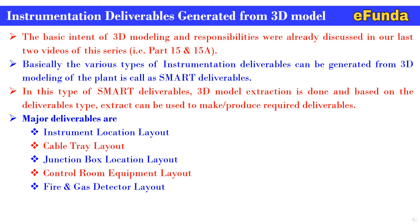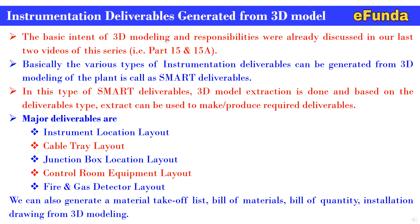Major deliverables are: instrument location layout, cable tray layout, junction box location layout, control room equipment layout, and fire and gas detector layout. For each type of deliverable, we have already created individual videos where complete details of each deliverable are covered as a separate video under the instrumentation and control engineering playlist, where one can find the details of each deliverable and how it is being prepared.